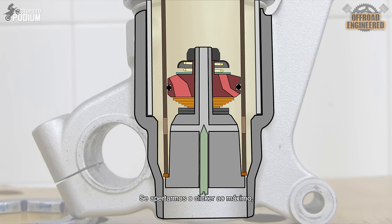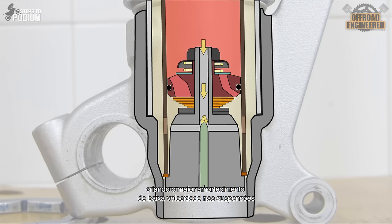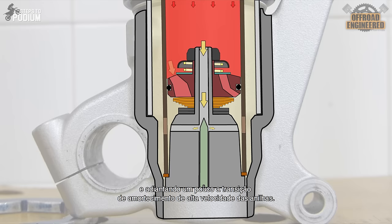If you fully screw the clicker, the needle will restrict the oil flow the most it can, creating the biggest amount of low-speed damping on the fork and anticipating, to a small degree, the high-speed damping transition created by the shim stack.